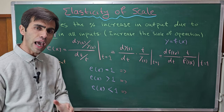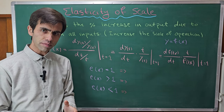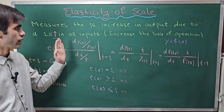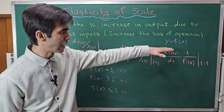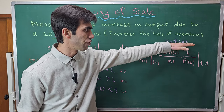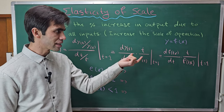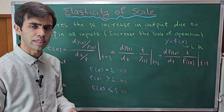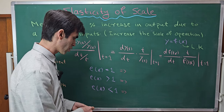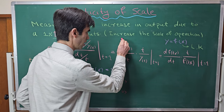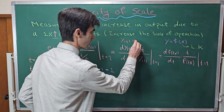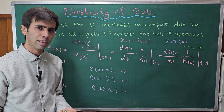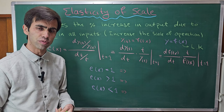So the elasticity of scale helps them to know whether they are going to have constant, increasing, or decreasing returns to scale. We have a formula for the elasticity of scale. Suppose we have our initial production function y = f(x), where x is a vector of inputs such as labor and capital. If we scale by some amount t, then y(t) = f(tx), meaning we increase all inputs by t.